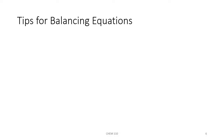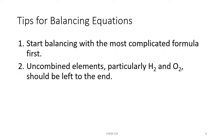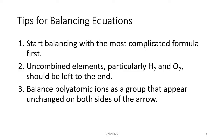Balancing equations is a lot of guess and check. Here are some tips: start with the most complicated formula first. Leave uncombined elements — like hydrogen or oxygen — to the end, since they're not chemically combined with anything else. Balance polyatomic ions as a group if they appear unchanged on both sides of the arrow.